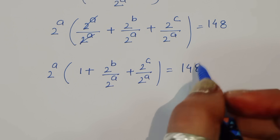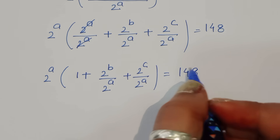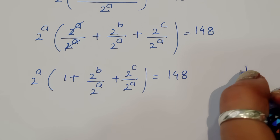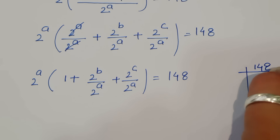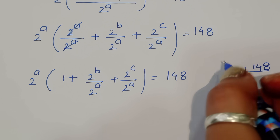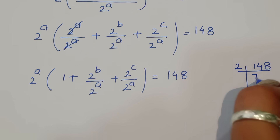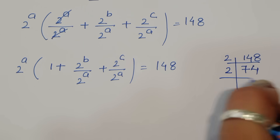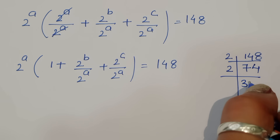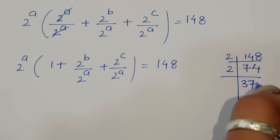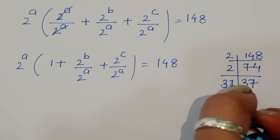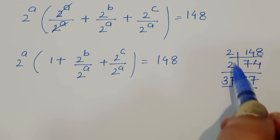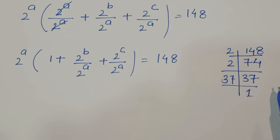Now this is 148, so we can find the factors of 148. Taking factors: 2 times 74 is 148, 2 times 37 is 74, and 37 is prime. So the factor of 148 is 2 times 2 times 37, which is 4 times 37.